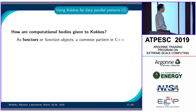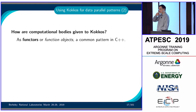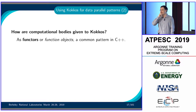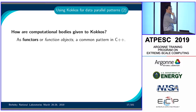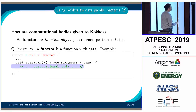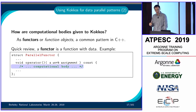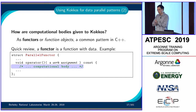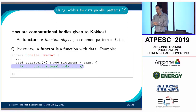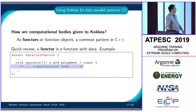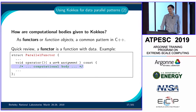Computational bodies are given to Kokkos as functors or function objects. A functor is essentially a struct with an operator() in it — a callable. You can call it like a function. Data members hold the data the functor accesses. To reproduce serial execution, you create your atom_force functor, write a constructor, pass in the data, and call the functor. That is literally how the serial backend in Kokkos would look.